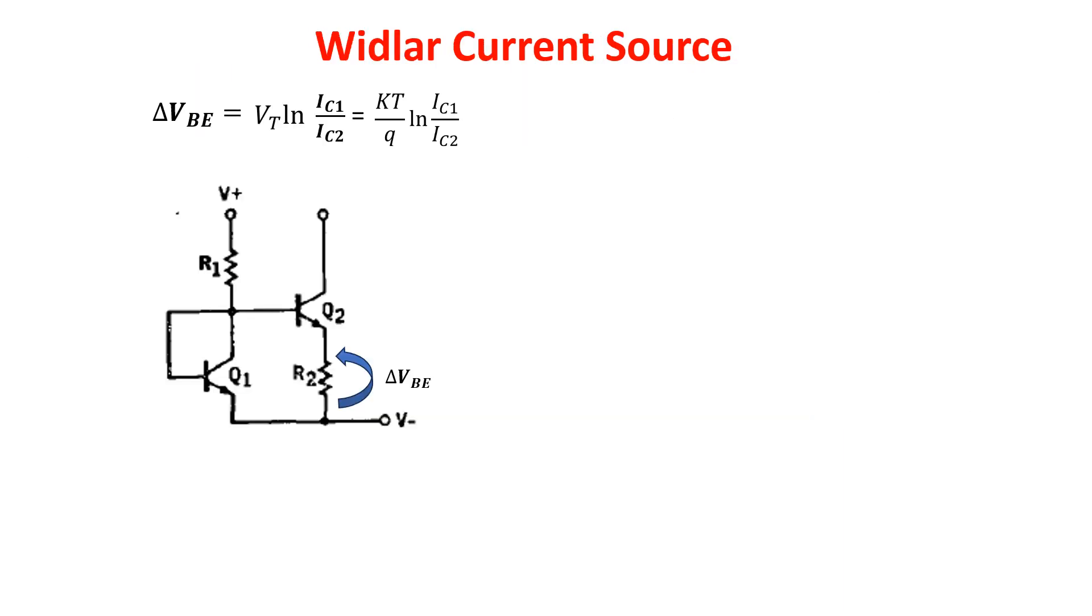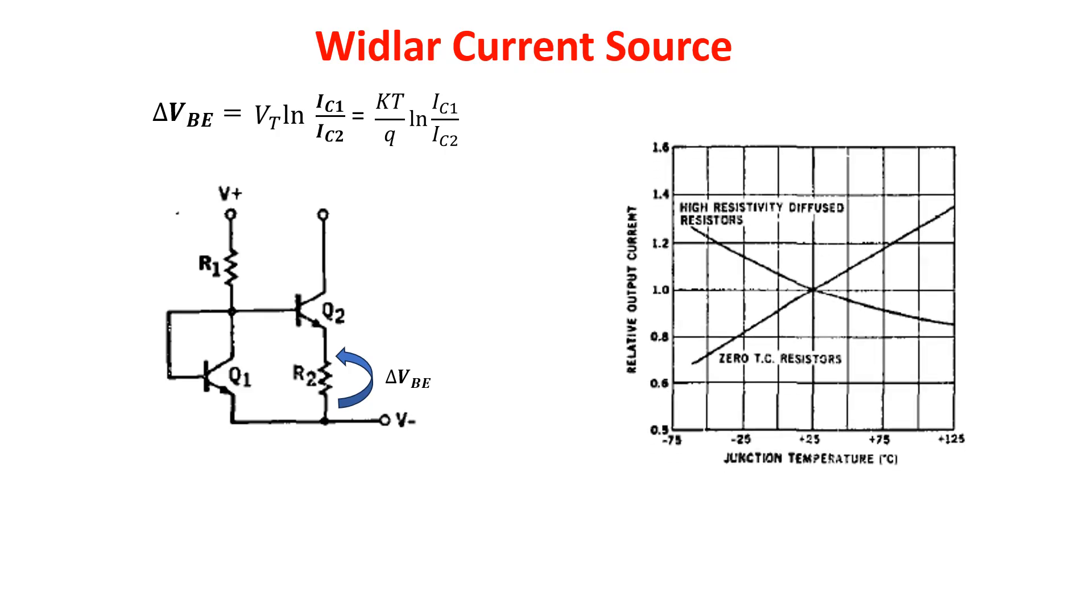It can be seen that the emitter base voltage differential is a linear function of absolute temperature. Therefore, it might be expected that the output current of the current source would vary in a similar manner. Such is the case as illustrated here. The plot is for IC1 equals 50 times IC2, with both zero temperature coefficient resistors and high resistivity diffused resistors. It is notable that diffused resistors provide overcompensation for this characteristic. This comment from the Widlar paper of 1965 is the base for another Widlar legacy, the bandgap reference, about which I leave a link in the description.